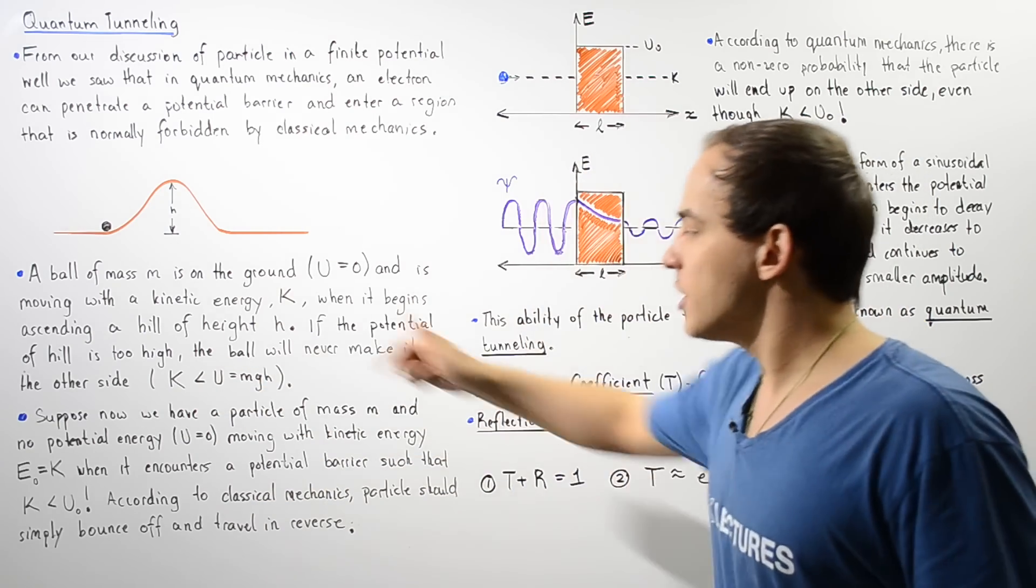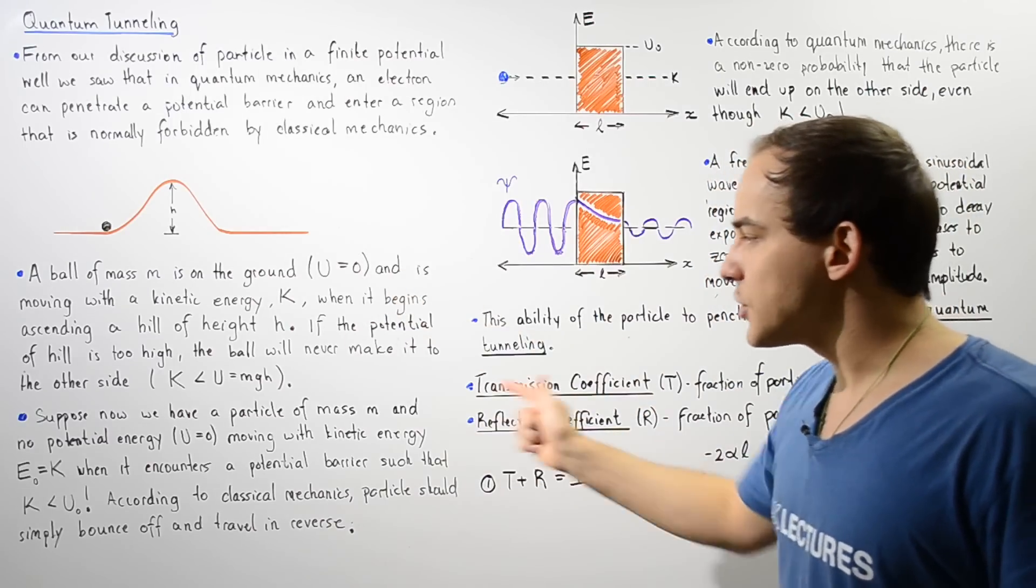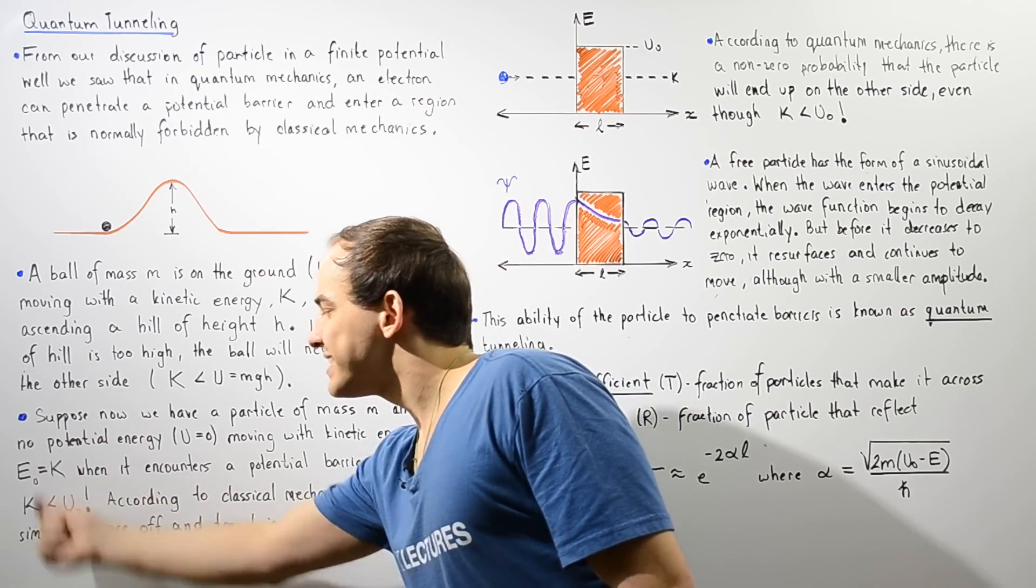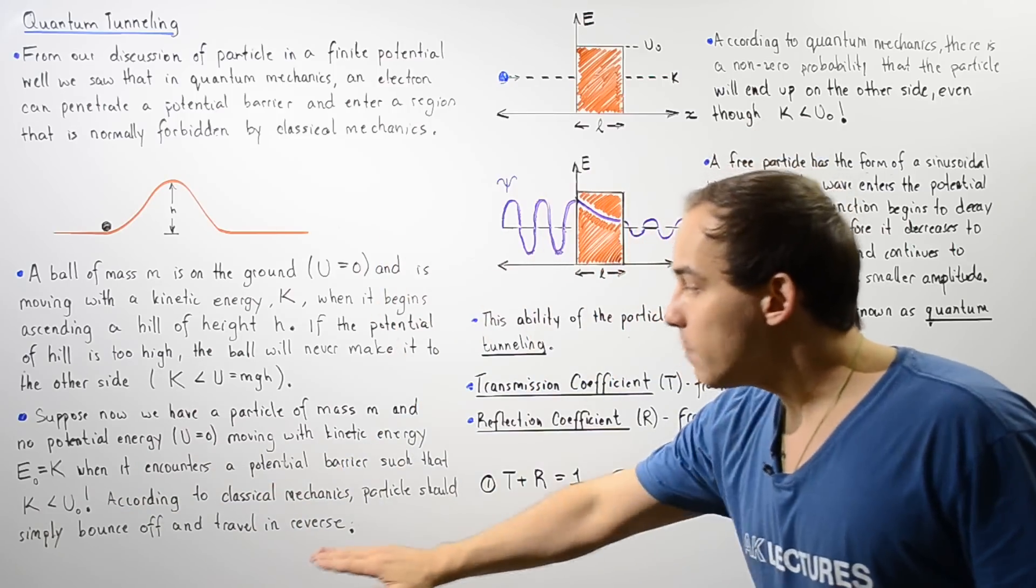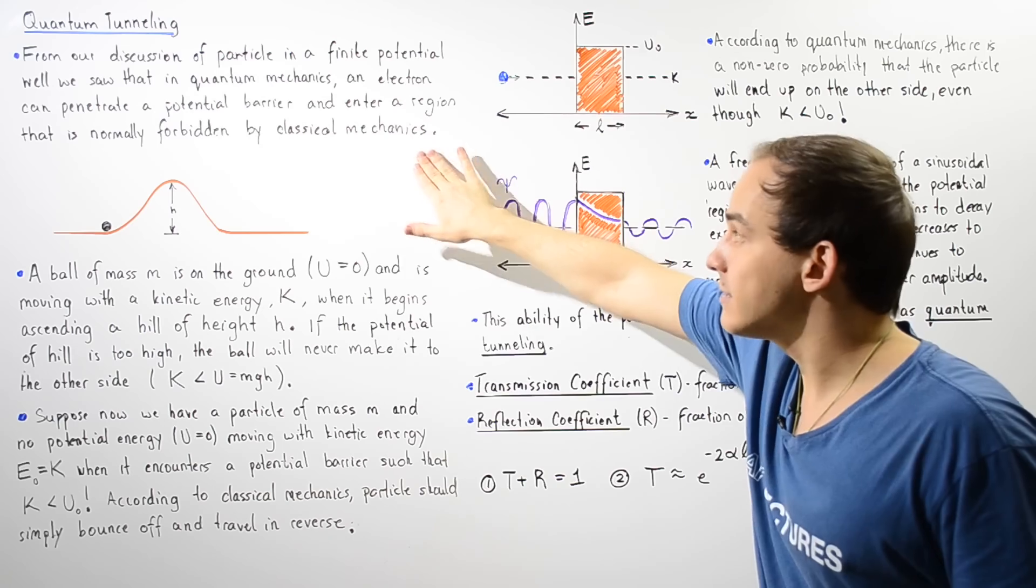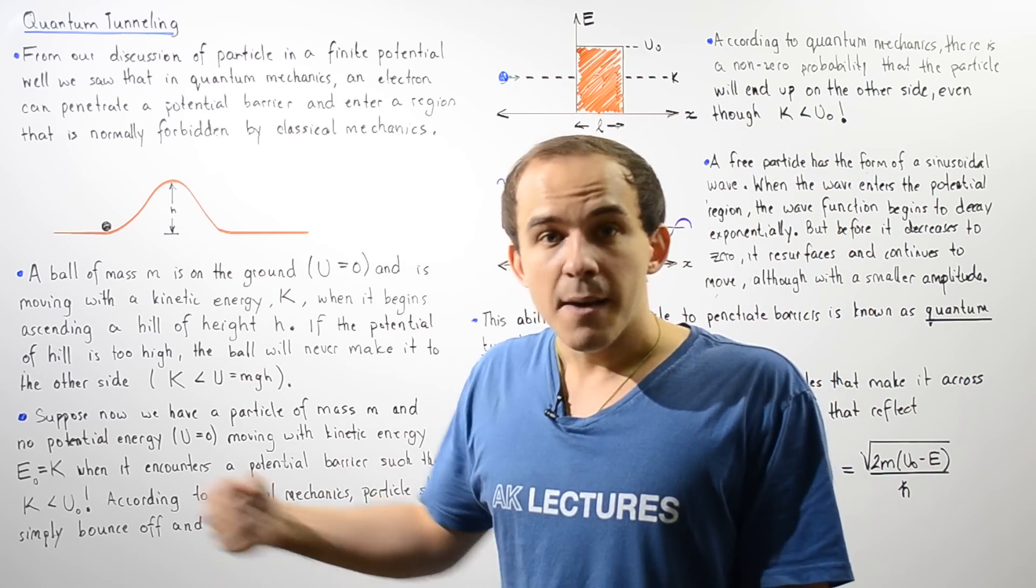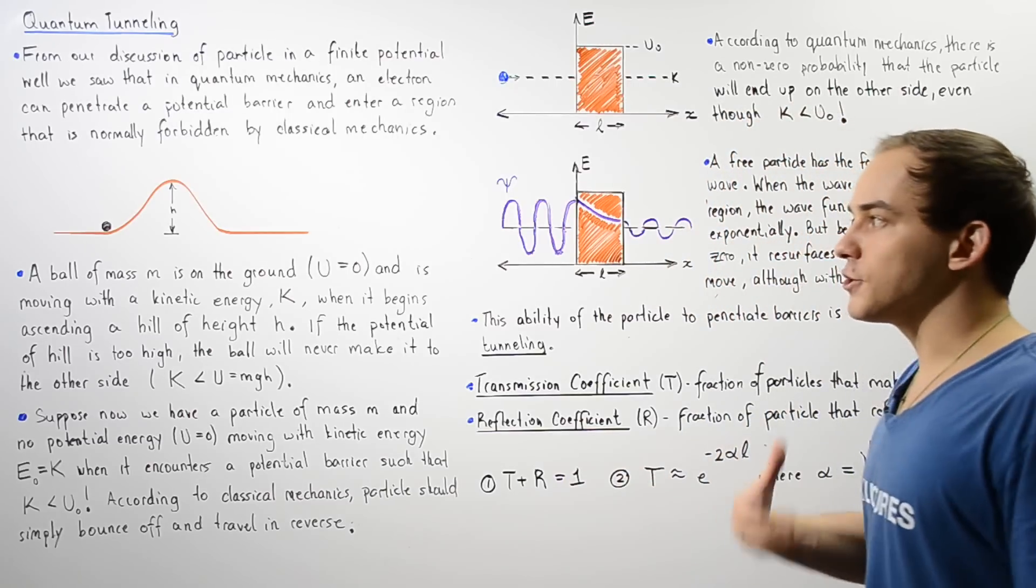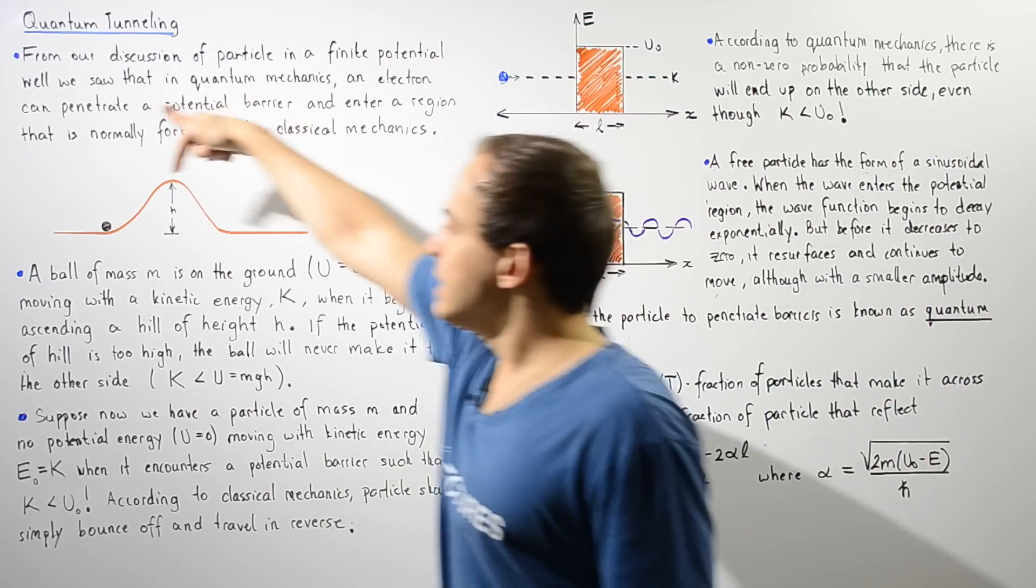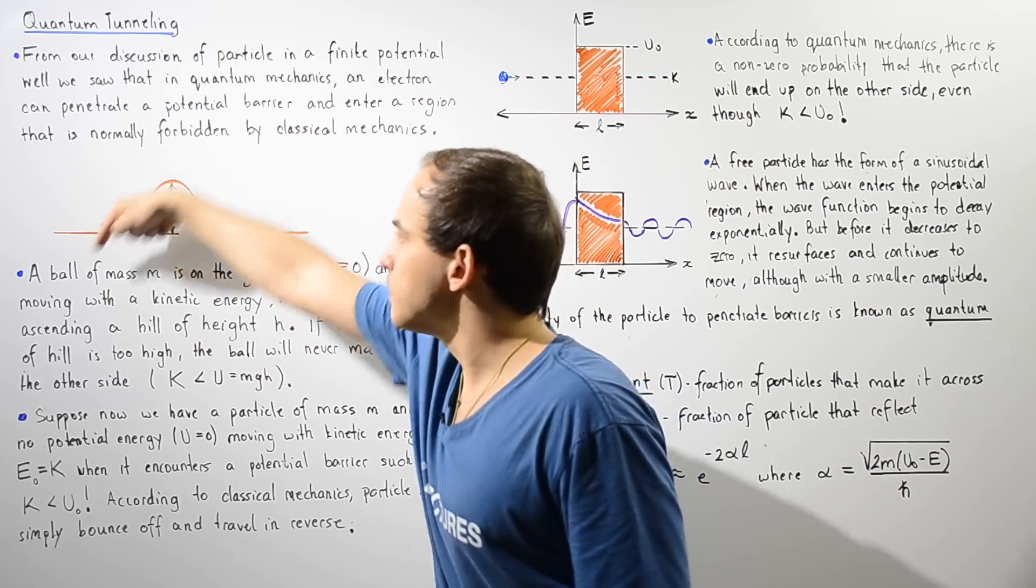So the electron encounters an electric potential barrier such that the electric potential energy U₀ is greater than the kinetic energy. So based on classical mechanics discussion, we see that the particle should technically bounce off and reverse in direction, reverse its motion the same way that this ball, if it doesn't have enough energy to surmount our hill, it will stop and reverse and travel downward in the reverse direction.